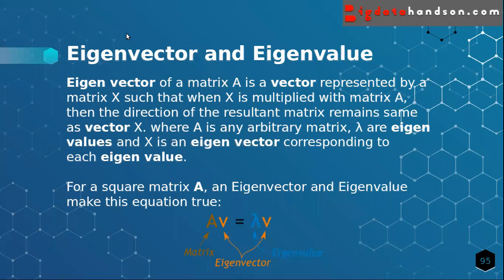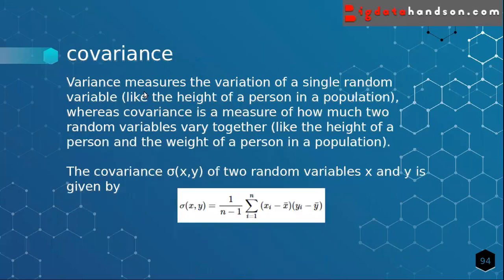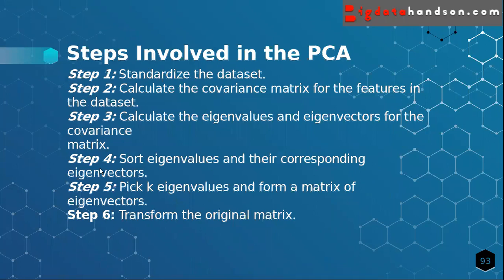In step four, we sort eigenvalues and their corresponding eigenvectors. In step five, we pick K eigenvalues and form a matrix of eigenvectors. In step six, we do the final transformation of the original matrix. These are the six steps involved in Principal Component Analysis.